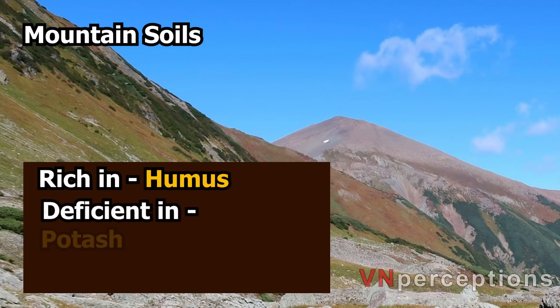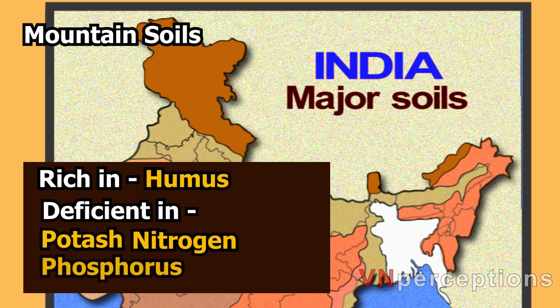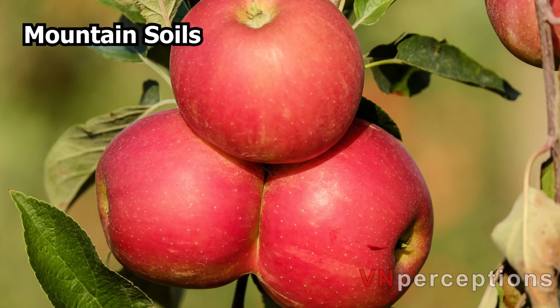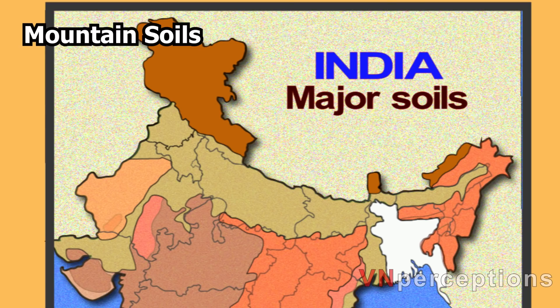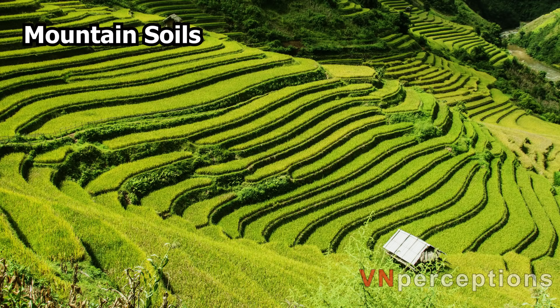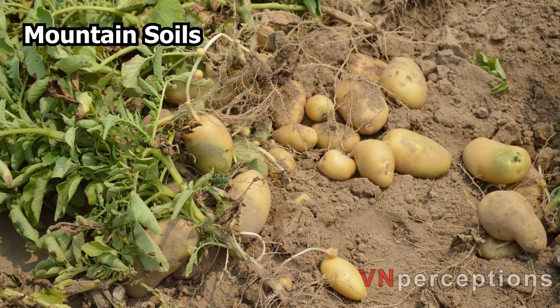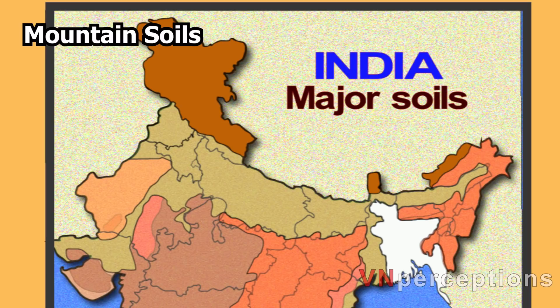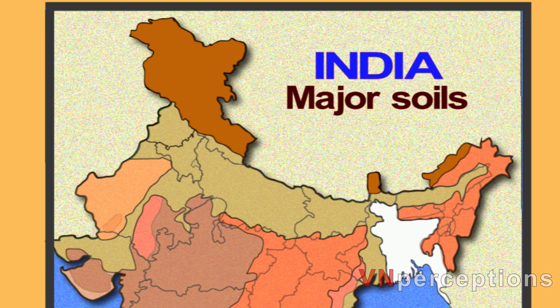The slopes are used for horticulture and plantation crops like tea, coffee, spices, apple, peach, etc. Rice and wheat are grown in valleys, and potatoes are grown in mostly all areas. These mountain soils are found in the hilly regions of Jammu and Kashmir, Sikkim, Assam and Arunachal Pradesh.